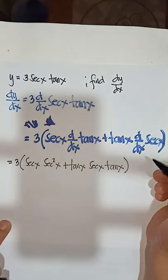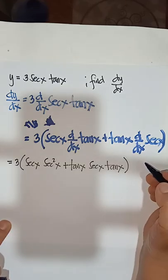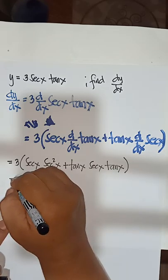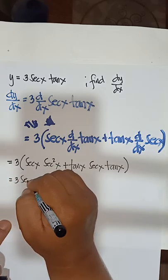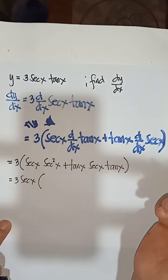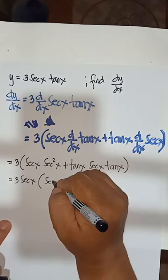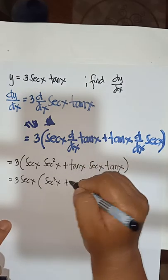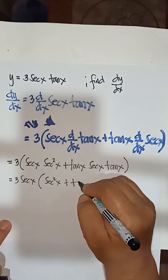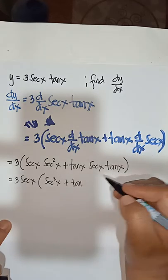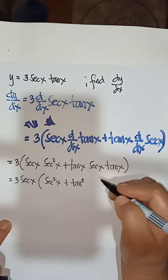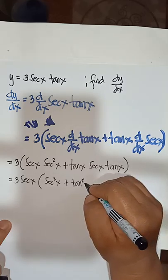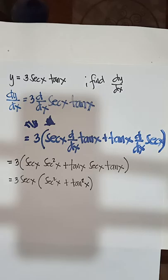Okay, so therefore, what is common? Oh my god, it's only secant, secant x. So 3 secant x, so we will have secant squared x plus tangent squared x.